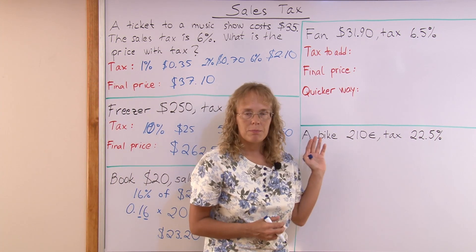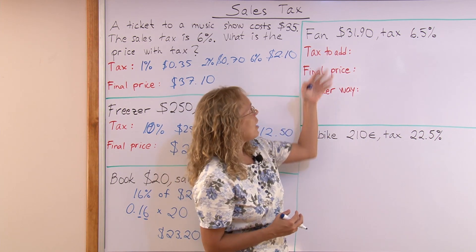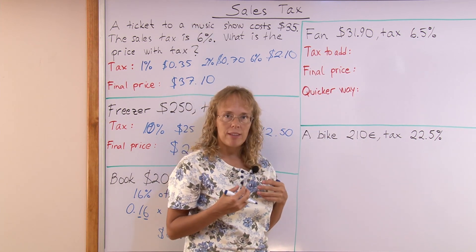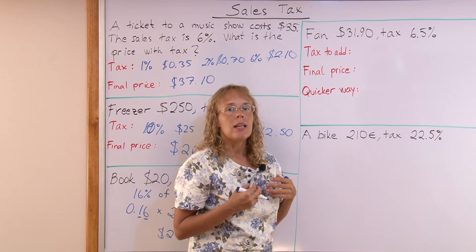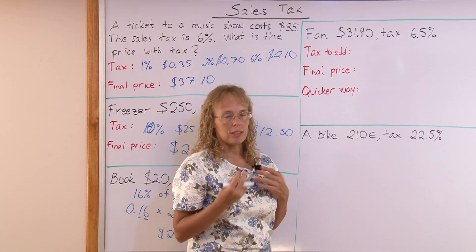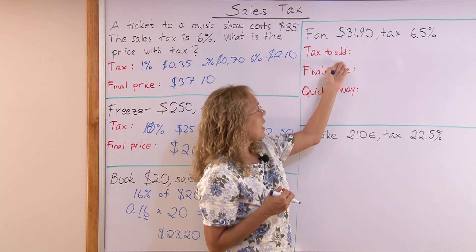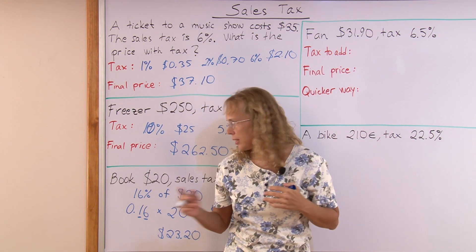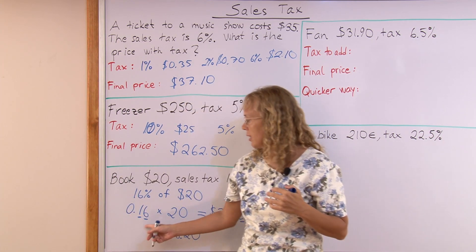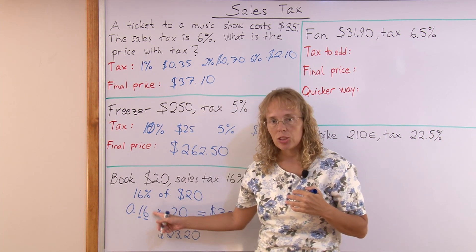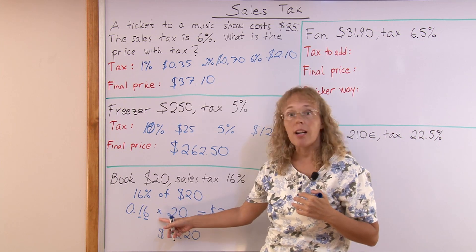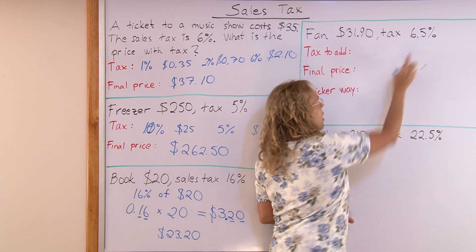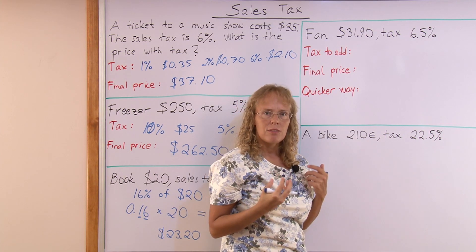Here I have an example with more difficult numbers: a fan costing $31.90 and the tax is 6.5%. We will use a calculator for these kinds of difficult numbers. Let's use the same method — where I have the tax percentage as a decimal, then times the number.